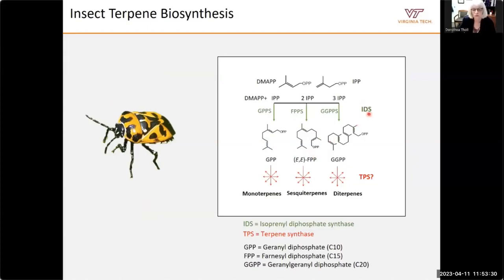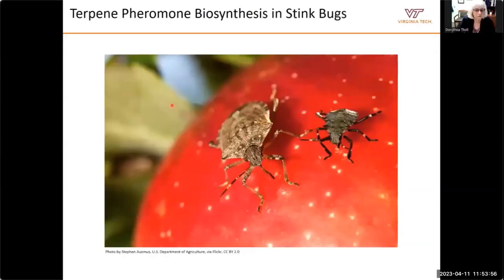We know insect IDS enzymes can make GPP and GGPP, but what we have not known for a long time is whether these intermediates can be converted by some type of enzyme with terpene synthase activity into terpene semiochemicals. Several years ago we started trying to find answers by studying terpene pheromone biosynthesis in stink bugs. Stink bugs are common around the globe, many are severe pests on different crops, and what caught our attention as terpene biochemists is that many of these species release male-specific aggregation or sex pheromones in the form of sesquiterpene volatiles.